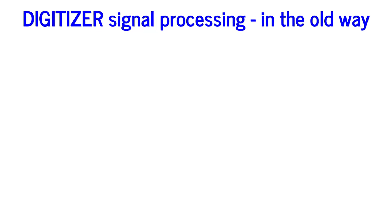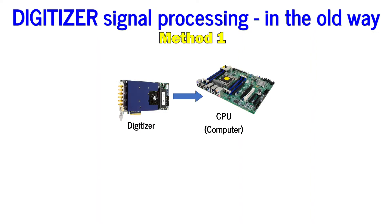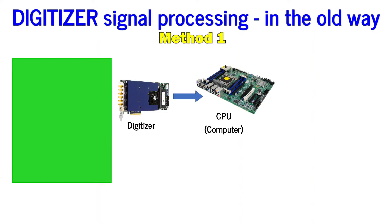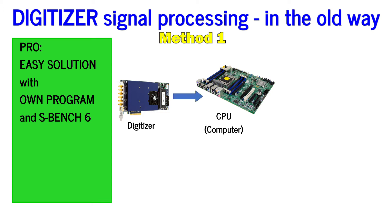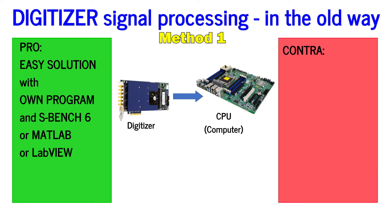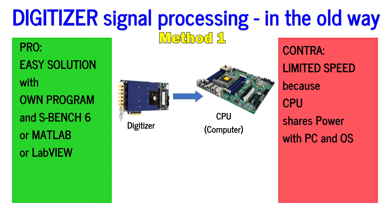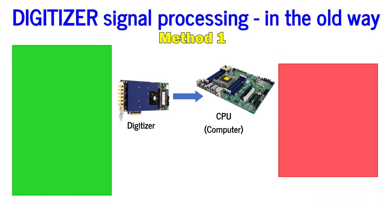The old way for signal processing: the first method simply sends the data to the CPU of the host PC. This conventional approach provides an easy solution. Users write their own analysis programs based on the vendor's API, using dedicated measurement software like Spectrum's SBench 6 or third-party software like MATLAB and LabVIEW. The overall performance and measurement speed is then limited by the CPU's available resources. In demanding applications this is a problem, as the CPU shares its processing power with the rest of the PC system as well as controlling the data transfer.